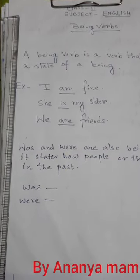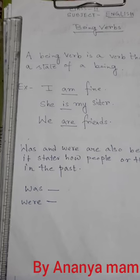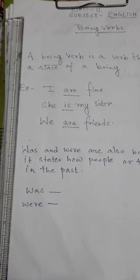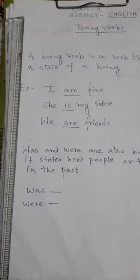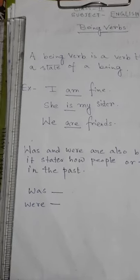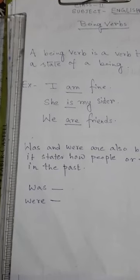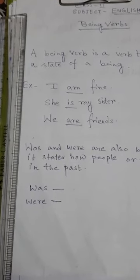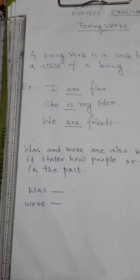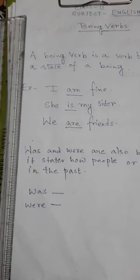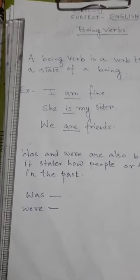Welcome children, today we will continue with the chapter on being verbs. Last day we learned about the uses of am, is, and are — these are used in the present situation. Today we will start with was and were.